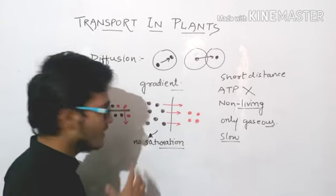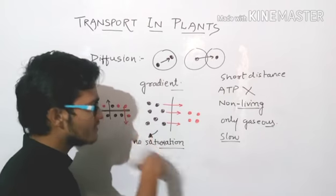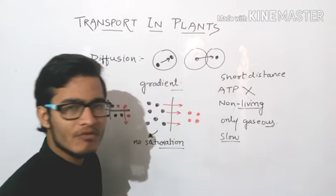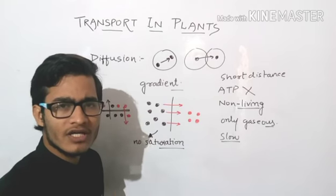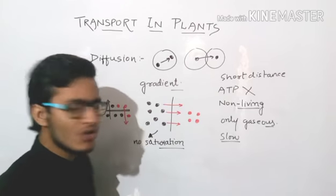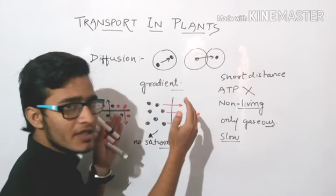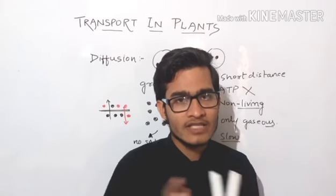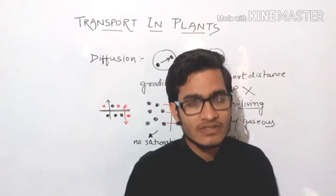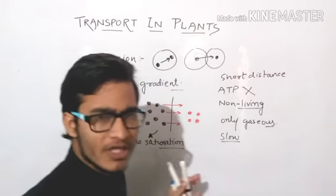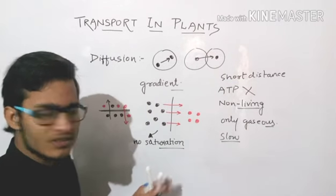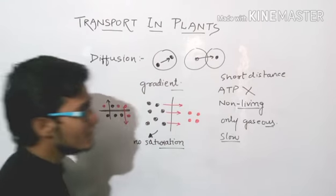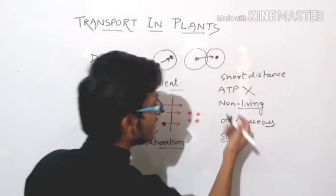It does not matter whether something is present or not — if there is a concentration gradient, it will keep flowing until the concentration is equal on both sides. When the concentration is equal, there is no gradient, no difference, and therefore no diffusion. This process of diffusion is a kind of passive transport because no ATP is required.